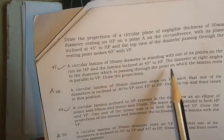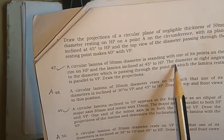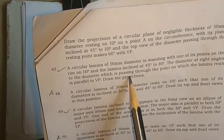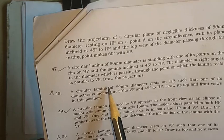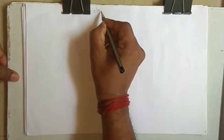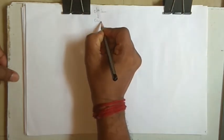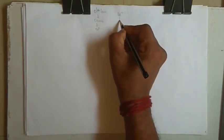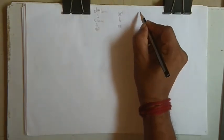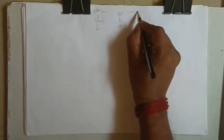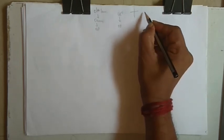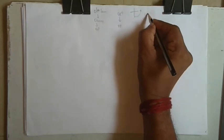So there is a circular lamina inclined to the HP. The diameter at right angles to the diameter passing through the resting point is parallel to the VP — so one of the diameters is parallel to the VP. We have a circular lamina of 50mm diameter resting on the HP, inclined at 45 degrees. This diameter will be parallel to the VP, so it will be rotated like this.